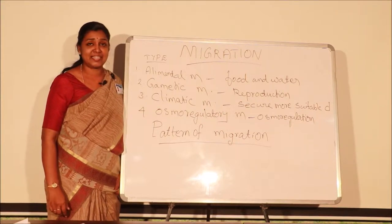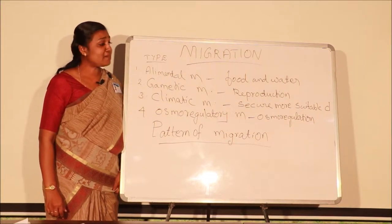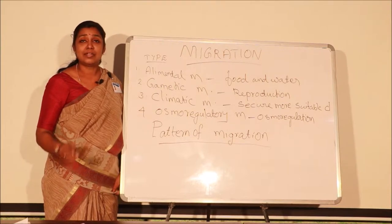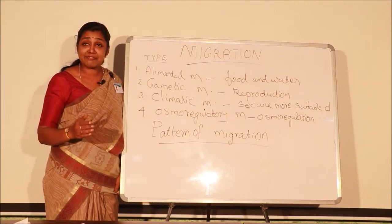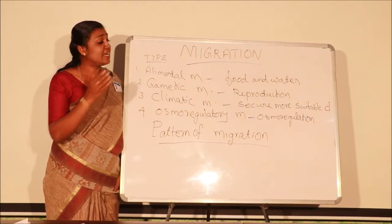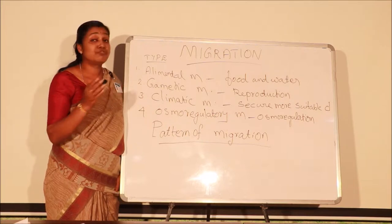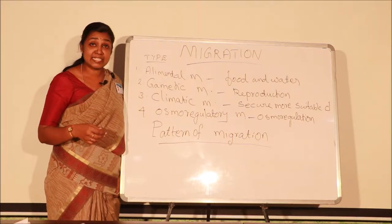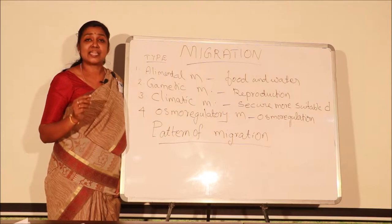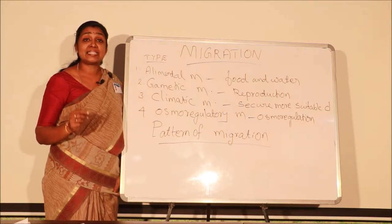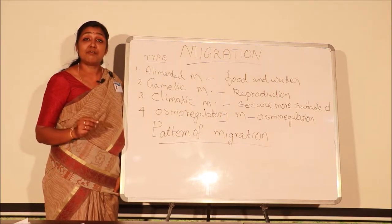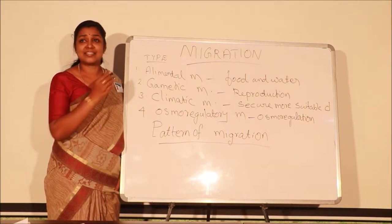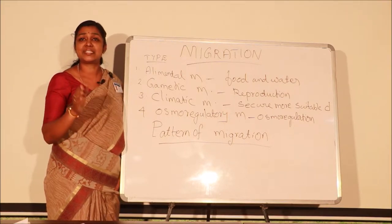The first type is elemental migration. Elemental migration is when fishes migrate from one place to another in search of food and water. The second type is gametic migration. Gametic migration is the migration happening for the purpose of reproduction — for breeding and spawning.